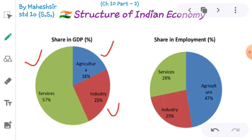Secondary sector is industries — small and large scale industries, factories, construction, electricity, gas and water supply are included in this section. This section is also acknowledged as industry, which includes production from small pin to giant machines.